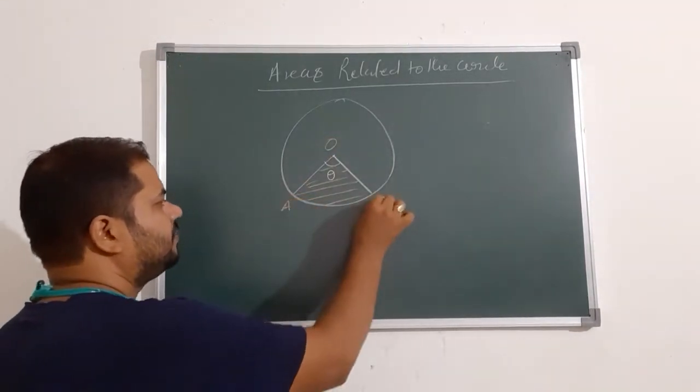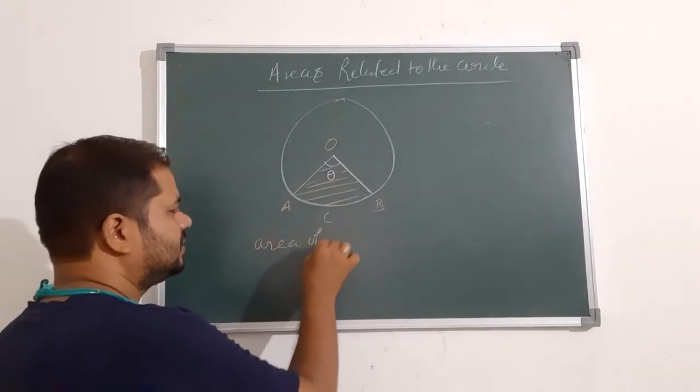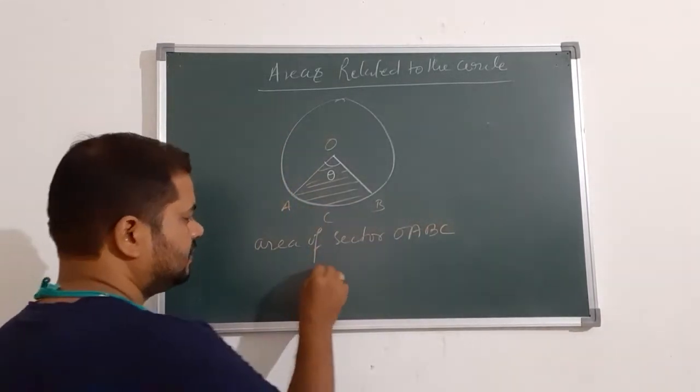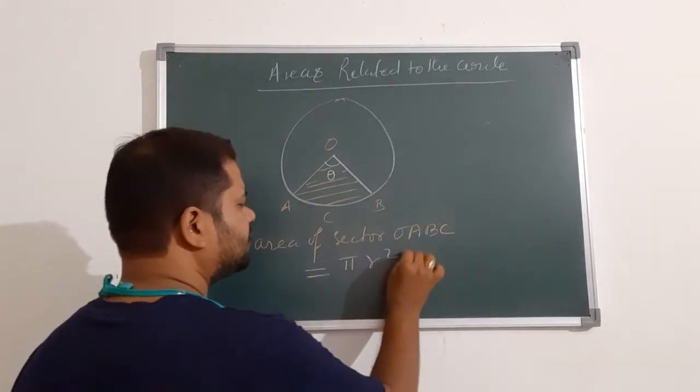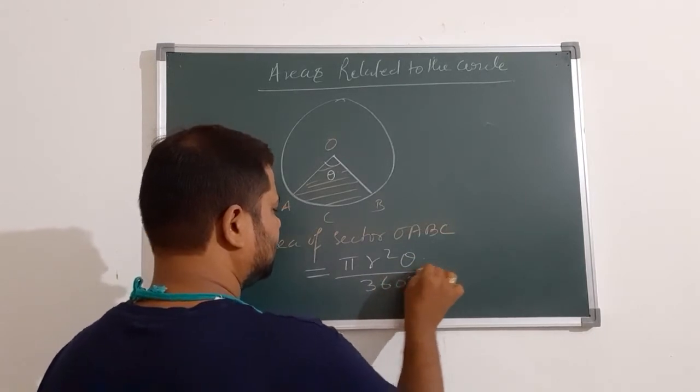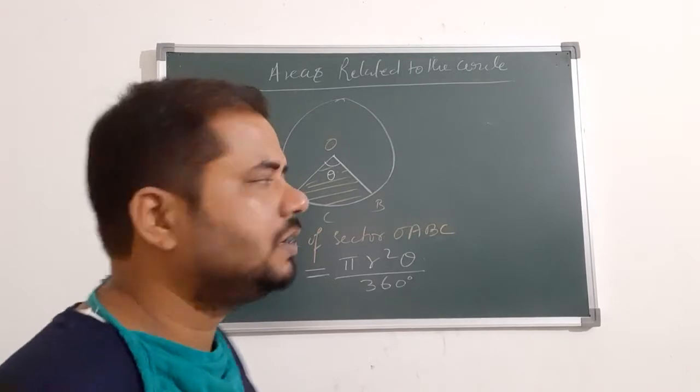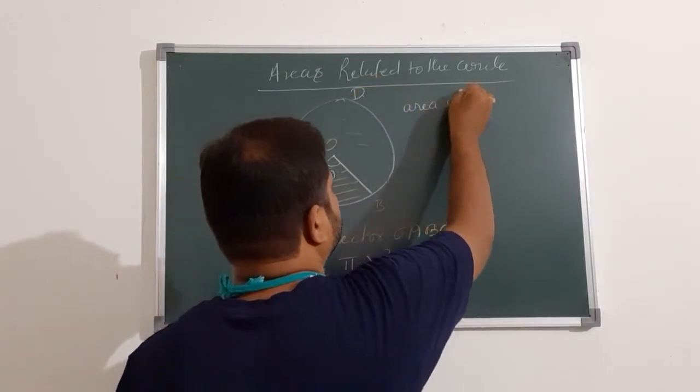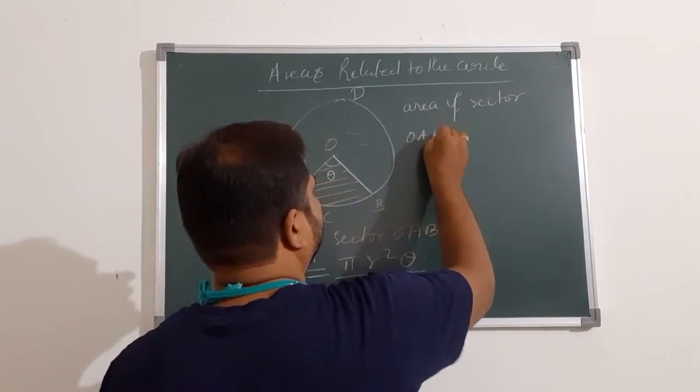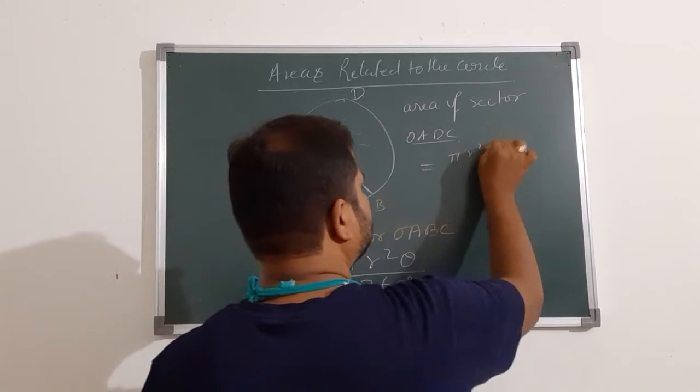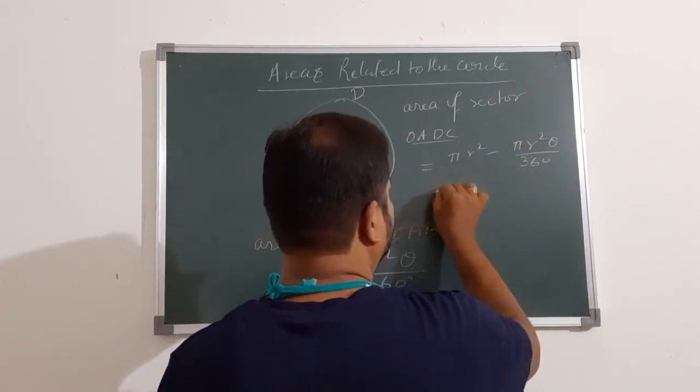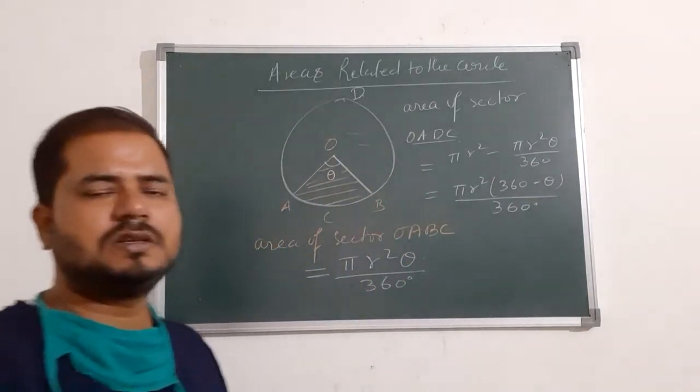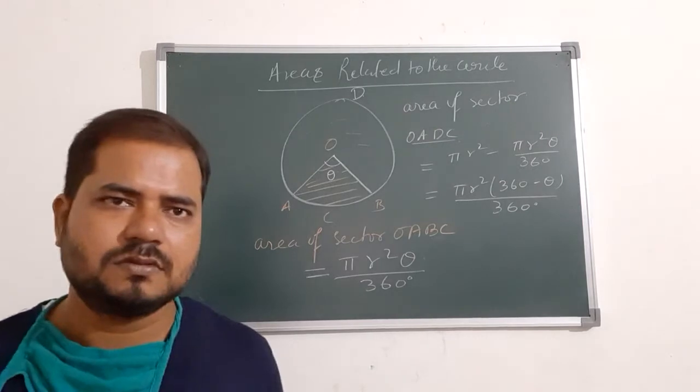This is O, this is OACP. This is area of sector that is minor sector. If you want to find this particular area that is area of major sector, suppose this is C, so area of sector OATC, this is the area of major sector.